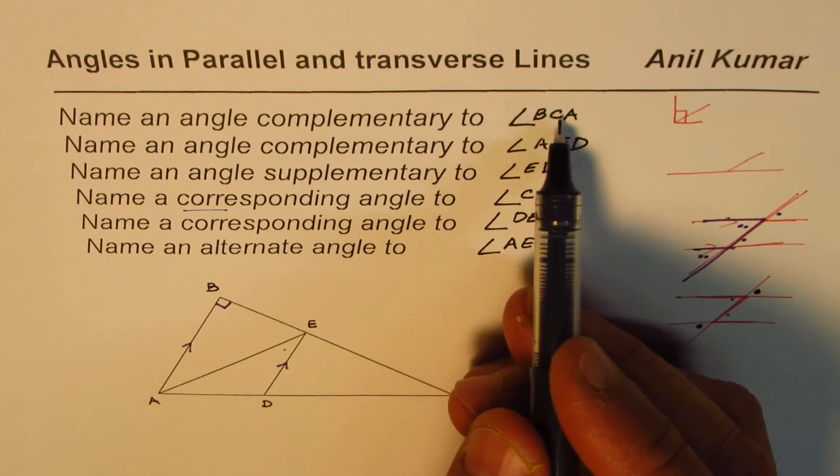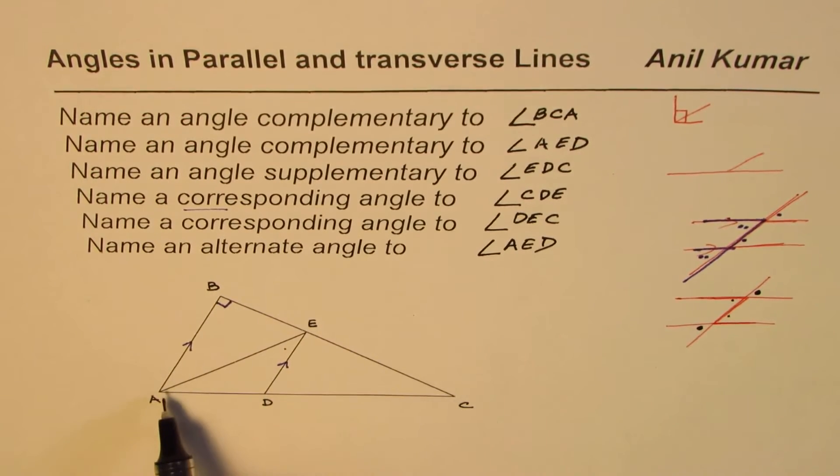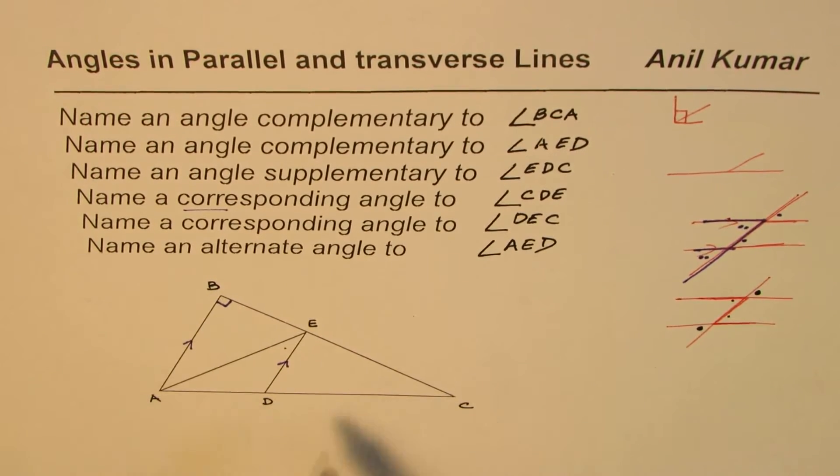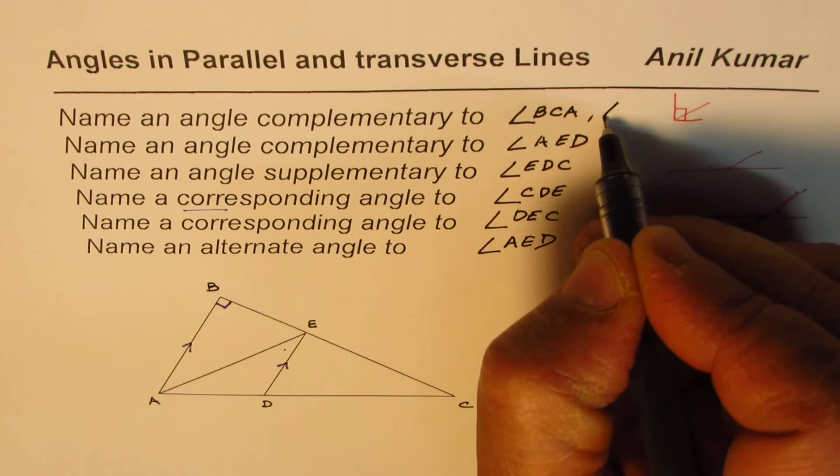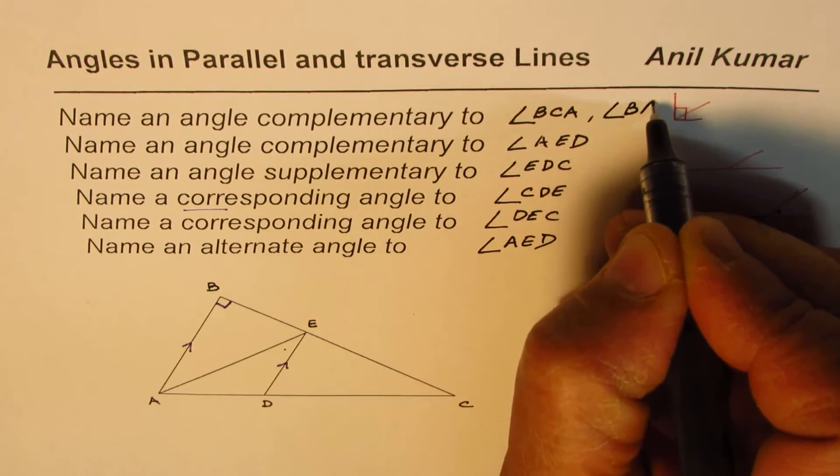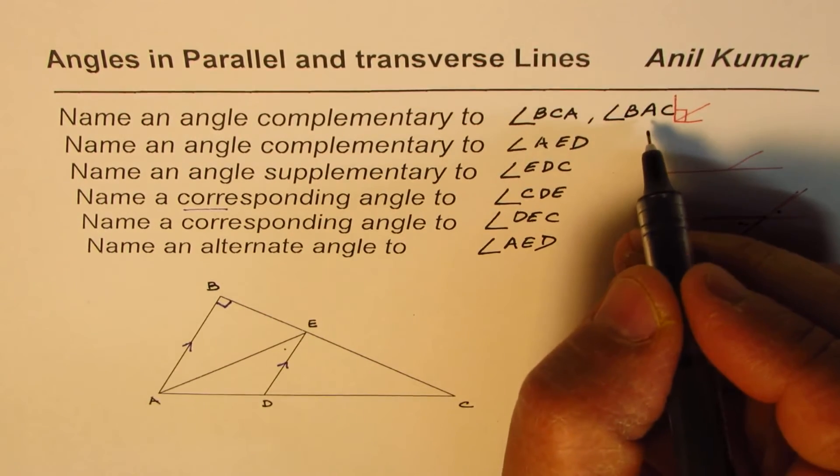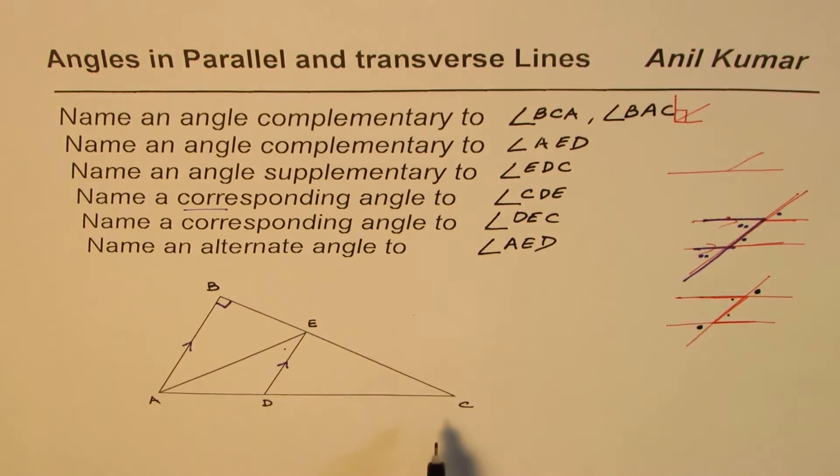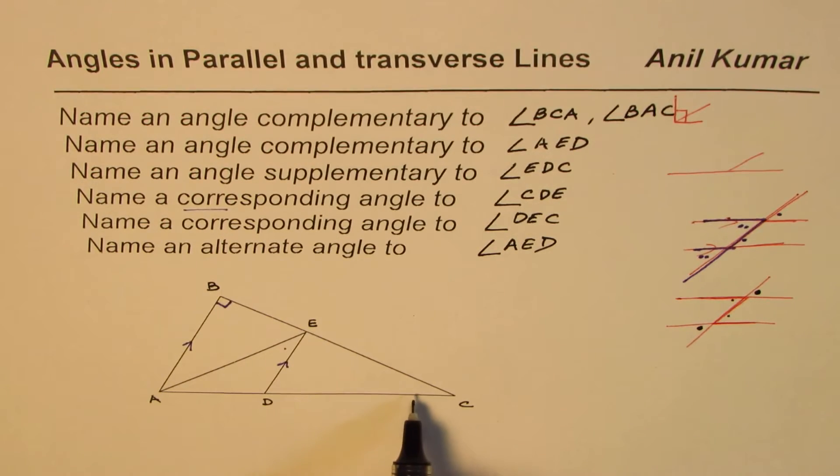So complementary angle in this case will be for BCA, BAC. So it is angle BAC. That was probably the most difficult question in this set, right? So combination of these two angles should give you 90 degrees.